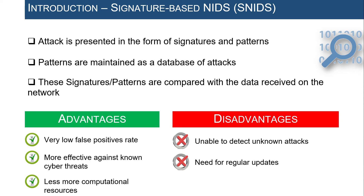The signature-based IDS relies on a signature database where known attack patterns are stored. It is very effective in detecting known cyber threats and is known for its near-zero false positive rate and very low consumption of computational resources. On the other hand, SNIDS does not detect unknown zero-day attacks and requires regular updates to its signature database, which is not practical given the rapid evolution of cyber attacks.